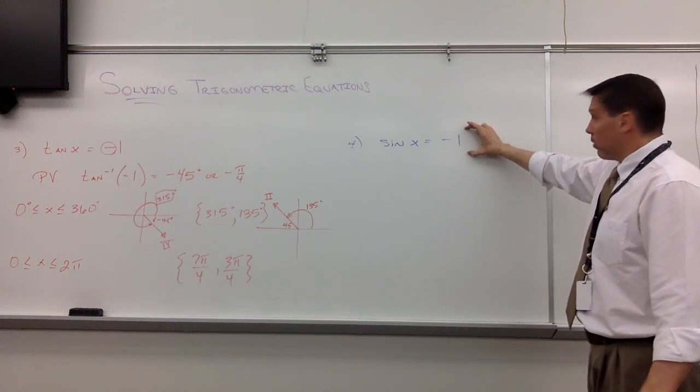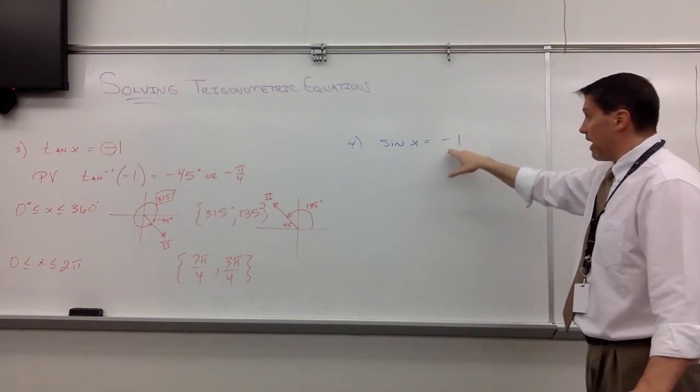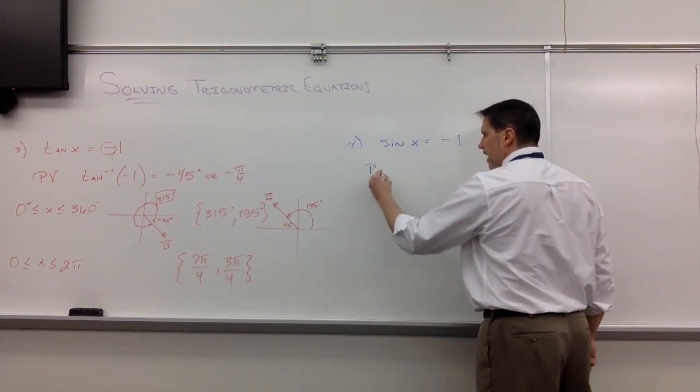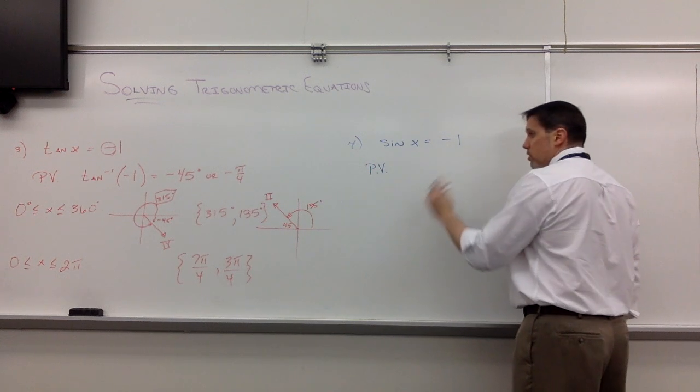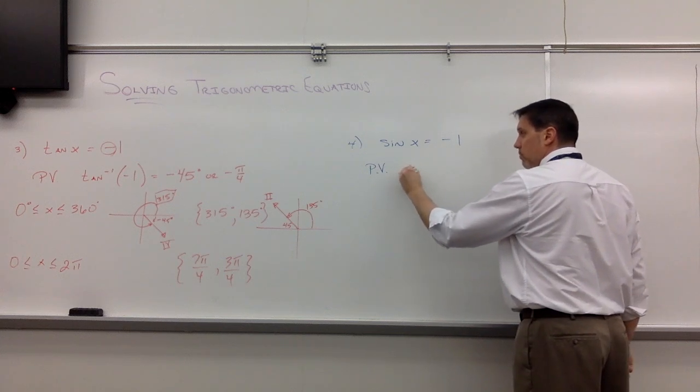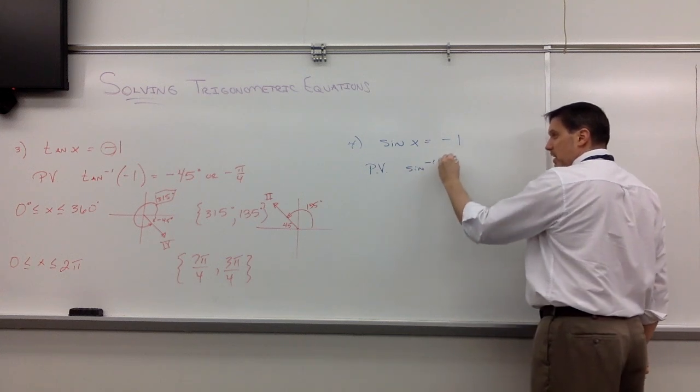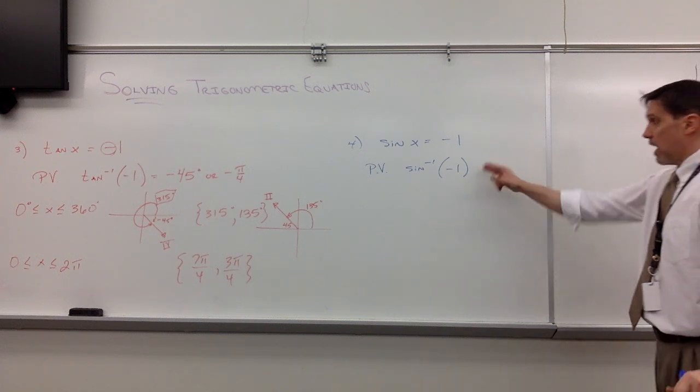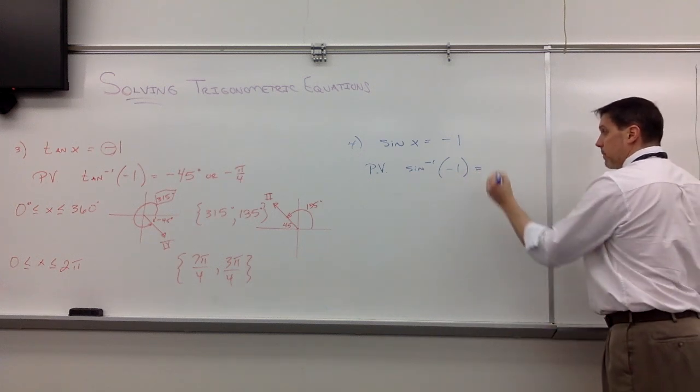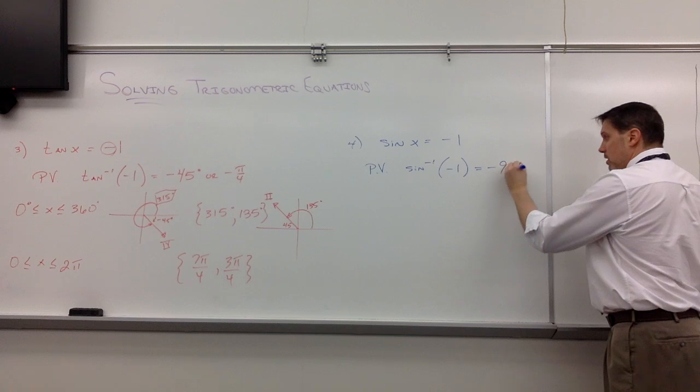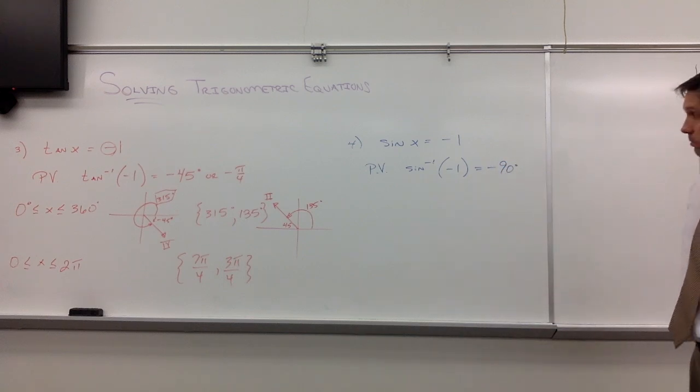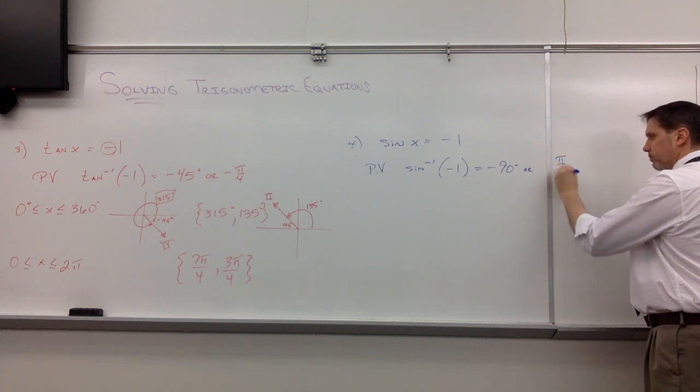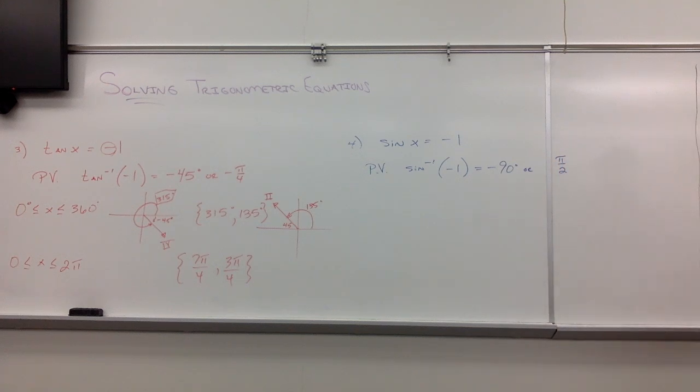We are working with a quadrantal angle where sine of x is equal to negative 1. If you go with your principal value here, principal value sine of x equals negative 1, we're looking at what sine inverse of negative 1 is. Now, on your calculator, if you're in degree mode, sine inverse of negative 1 is going to be negative 90 degrees. That's our principal value. Or, if we're talking radians, we would simply say negative π/2.